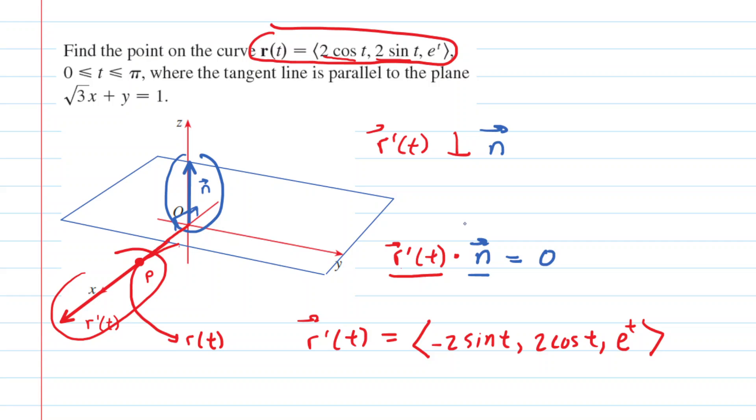We also need the normal vector of the plane. Take a look at the plane's equation: √3x + y + 0z = 1. When you learned about equations of planes, you remember these direction numbers. √3 is a direction number, 1 is the coefficient of y, and 0 is the coefficient of z. We remember that the direction numbers give us the normal vector. So the normal vector is ⟨√3, 1, 0⟩.